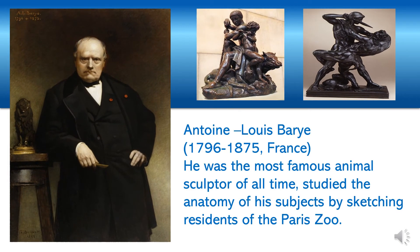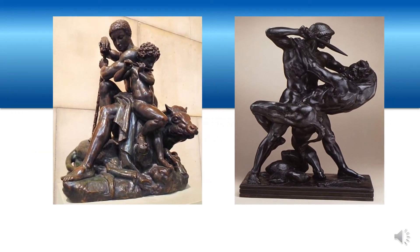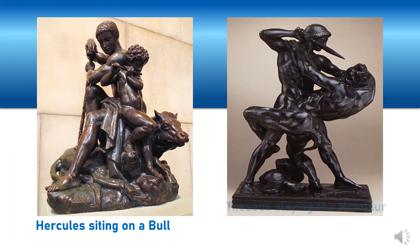Antoine Louis Barry, 1796–1875, France. He was the most famous animal sculptor of all time, and studied the anatomy of his subjects by sketching residents of the Paris Zoo. His famous works include: 1. Hercules Sitting on a Bull, and 2. Theseus Slaying the Minotaur.